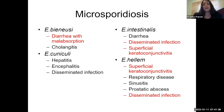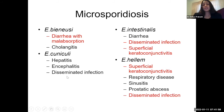Depending on the species, you'll have different clinical scenarios. Bieneusi primarily causes diarrhea with malabsorption, with possible cholangitis. Intestinalis is also associated with diarrhea, but can disseminate to include the eyes — you can see superficial keratoconjunctivitis. Cuniculi is associated with hepatitis and encephalitis as well as disseminated infection. Hellem, like intestinalis, can cause superficial keratoconjunctivitis, as well as respiratory disease, sinus disease, prostatic disease, and dissemination. Three out of four are associated with disseminated infection.